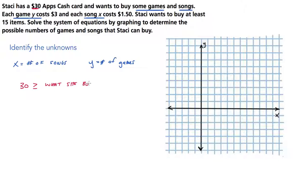What Stacey's buying is songs and games. We know that each song costs $1.50, so I'm going to write 1.50 times the number of songs, and I'm going to add that to the cost per game, which is $3 per game. So the cost of the songs plus the cost of the games must be less than or equal to 30. We've got one equation done.